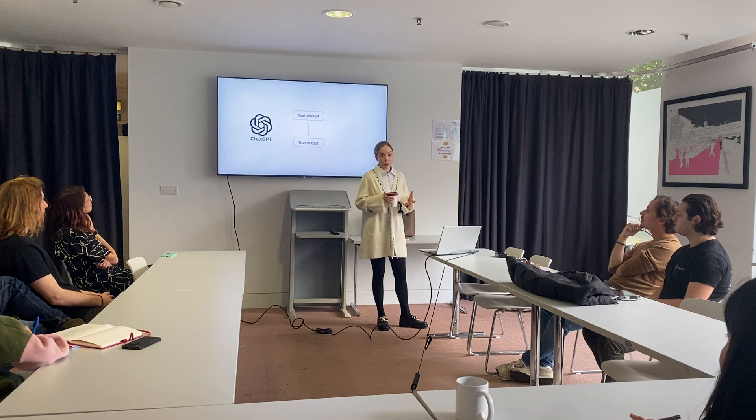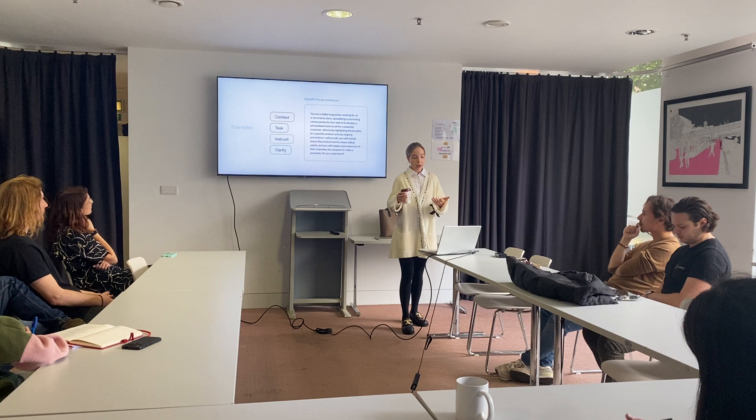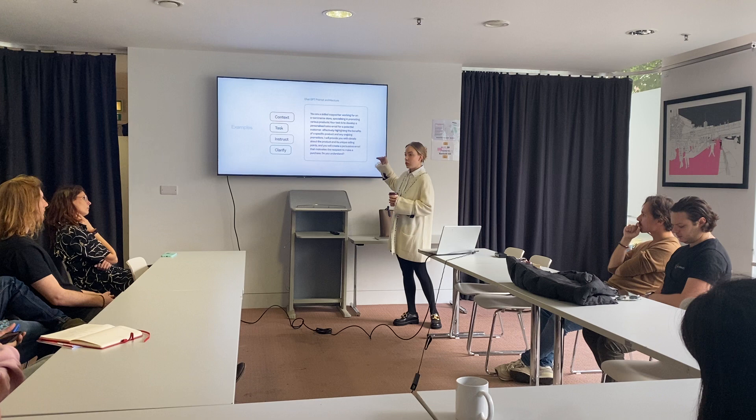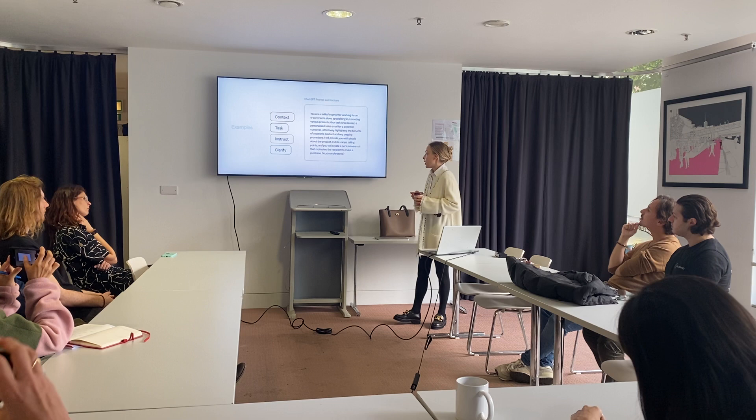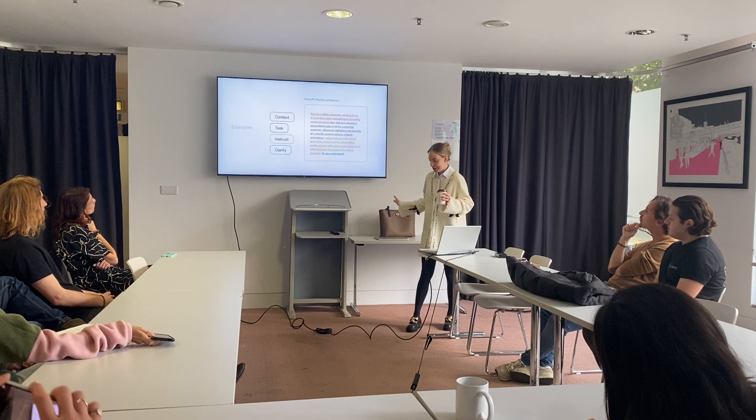We all know ChatGPT. It uses a text prompt and provides a text output — that is called Unimodal AI. In order to prompt correctly, you have to have these things in your prompt: context, to give the AI an idea of what's going on; the task; the instruction; and then clarification. You can see how in this example it is actually structured that way.